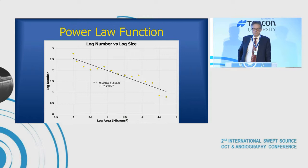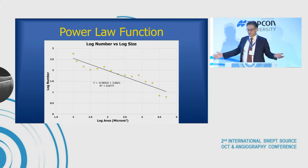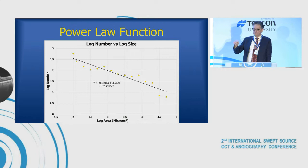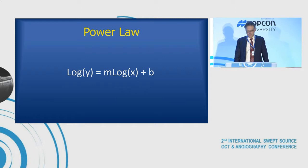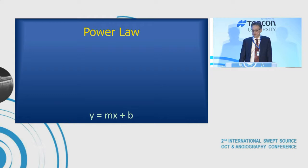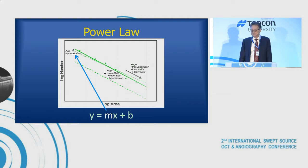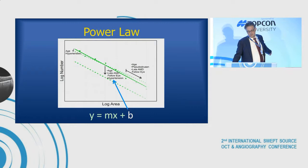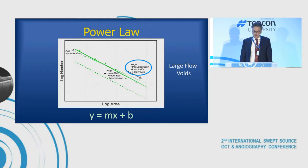Those defects in choriocapillaris flow follow the same kind of pattern we see in nature. We really can't take averages and means of those flow voids because they don't follow a normal curve — they follow this power law curve. Looking at the slope of that line, it's related to age and hypertension in this group of patients, and the offset is related to age, having late AMD in the fellow eye, or having hypertension. So by looking at one eye's choriocapillaris, we can infer if they have late AMD in their other eye.